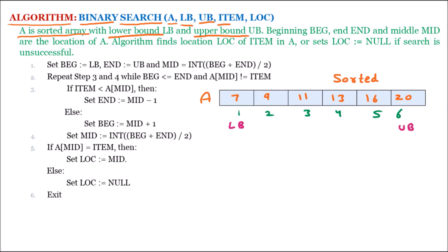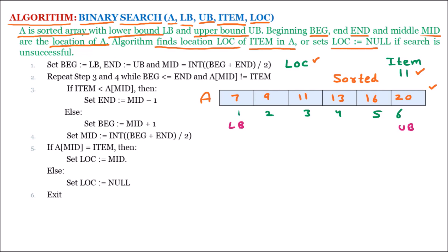The next parameter is item. We are assuming the item we want to search in the array is 11. The next parameter is LOC, which means location. Binary search will find item 11 inside the array and return its location. We also have beginning, end, and middle as working variables in array A. If the location is not found, the location will be null.